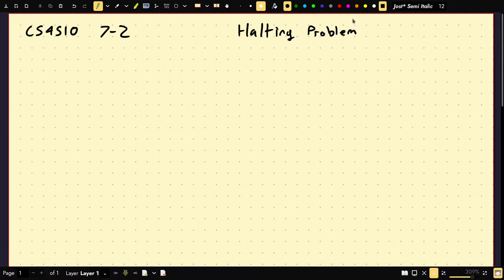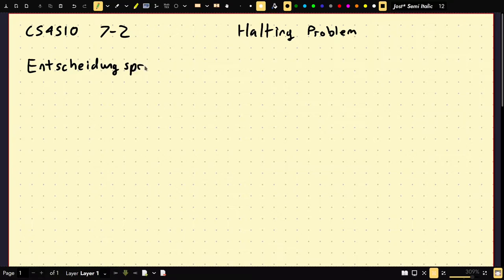Let's give some history. There was David Hilbert at the turn of the century. He formulated several mathematical open questions he wanted solved, and one of them was called the Entscheidungsproblem — that's German for Decision Problem.